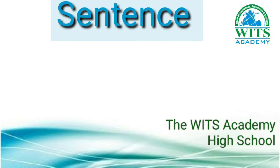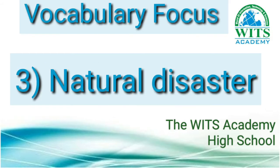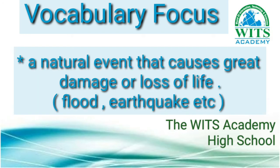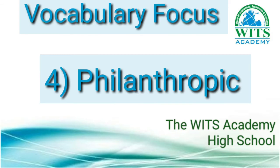The sentence for infrastructure is: we need to spend more money on maintaining and repairing infrastructure. Word number three is natural disaster. The meaning is a natural event that causes great damage or loss of life, such as flood, earthquake, tsunami, etc. The sentence is: the natural disaster left a huge number of people homeless.